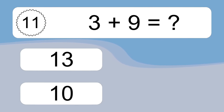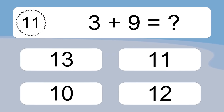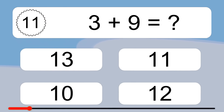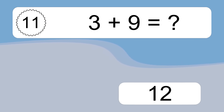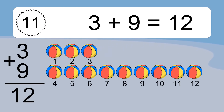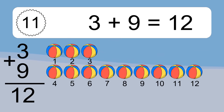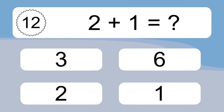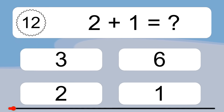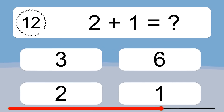3 plus 9 equals what? 3 plus 9 equals 12. 1, 2, 3, 4, 5, 6, 7, 8, 9, 10, 11, 12.